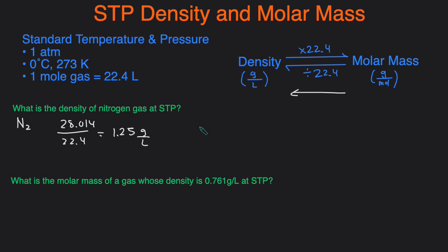If you have to show your work through dimensional analysis this is what you would do. You would do 28.014 and the units for molar mass is grams per mole. Then we would multiply by the conversion factor.